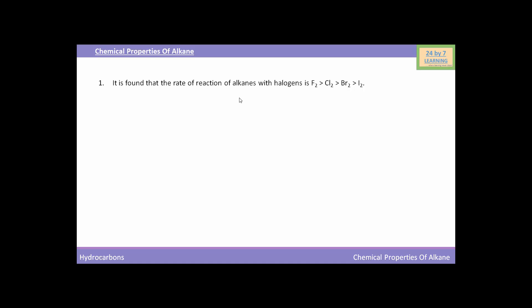It is found that the rate of reaction of alkanes with halogens is F2 > Cl2 > Br2 > I2. In this series you can see fluorine is highly reactive with alkanes while iodine is least reactive with alkanes.